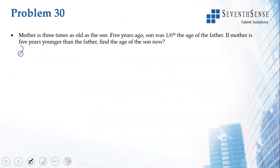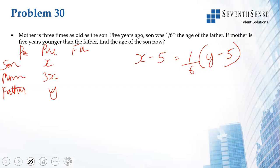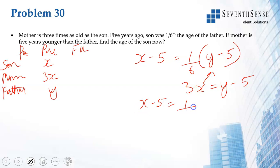Next question: Son's present age is x, mother is 3 times as old as the son so she is 3x, and father's age is y. Five years ago son's age was x − 5, which was 1/6th of the father's age. Mother is 5 years younger than the father, so 3x = y − 5. Substituting, x − 5 = 1/6 × 3x, giving 6x − 30 = 3x, so x = 10.